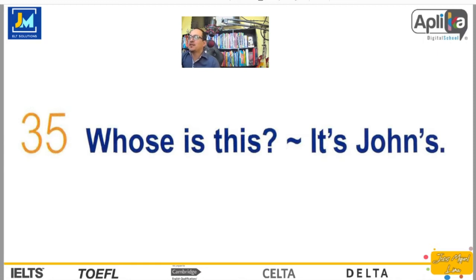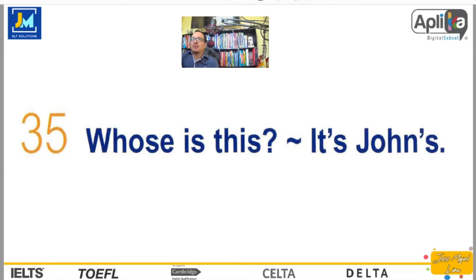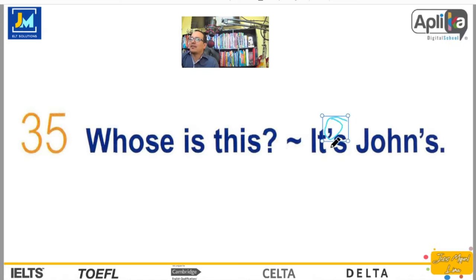Whose is this? It's John's. Vamos a hablar ahora acerca de otro posesivo, acerca de cómo nosotros jugamos con la otra parte del posesivo en inglés. Hasta ahora hemos aprendido el posesivo en cuanto a: esta es la casa de Pedro, esta es la bicicleta de María, etc. Pero hoy vamos a aprender qué quiere decir este pequeño apóstrofe que ves aquí.